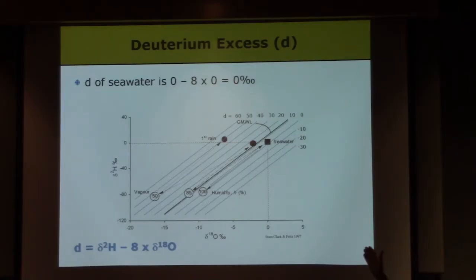What's the deuterium excess value of seawater? Well, it's 0 per mil, right? What's the intercept of the global meteoric water line? 10, okay.